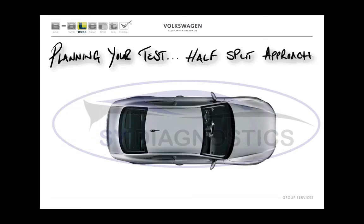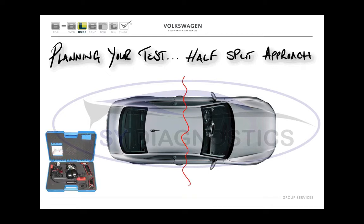This is all about narrowing down the area that the fault could lie in as efficiently and as quickly as possible. There are a few good methods depending on whether the fault is mechanical — like a rattle — or electrical — like a horn not working. The method I'm going to show you works really well for both types of faults. It's called the half-split approach, and it's pretty much exactly as it sounds: you split the circuit or the vehicle into two halves.